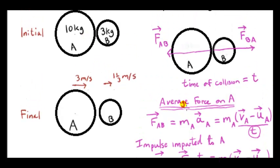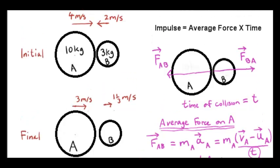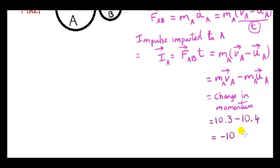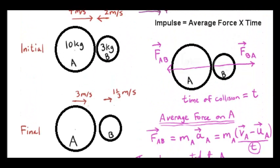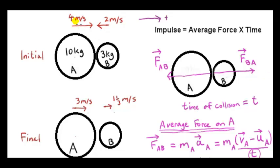Now, the mass of sphere A is 10. Its initial velocity is 4 meters per second to the right, so I'll take directions to the right as positive. Its final velocity is 3 meters per second to the right. Okay, so the change in momentum is minus 10, so the momentum of sphere A decreases. That makes sense because it slows down. It slows down from a speed of 4 to 3 meters per second. It loses momentum.